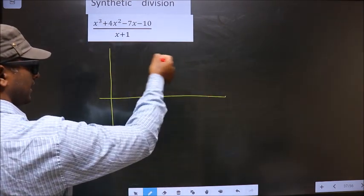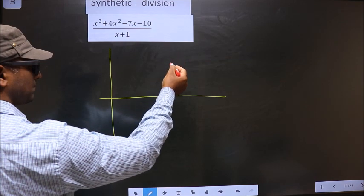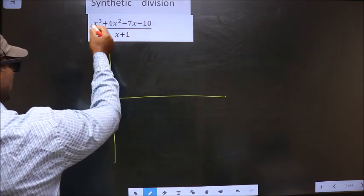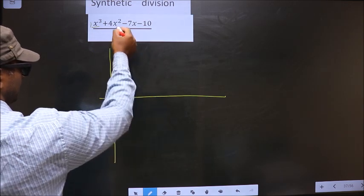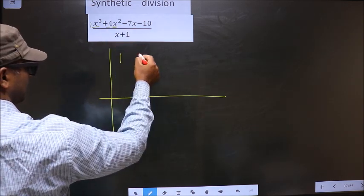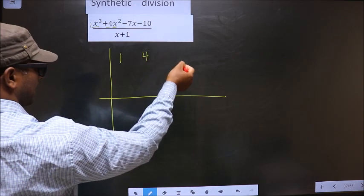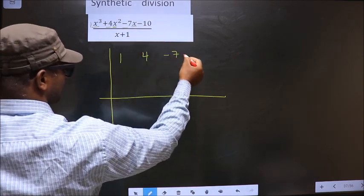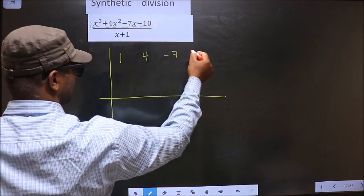Here we should write coefficients taken from the numerator. So starting with x cube, x cube coefficient is 1. Next, x square coefficient 4 and next x coefficient minus 7. Finally, the constant minus 10.